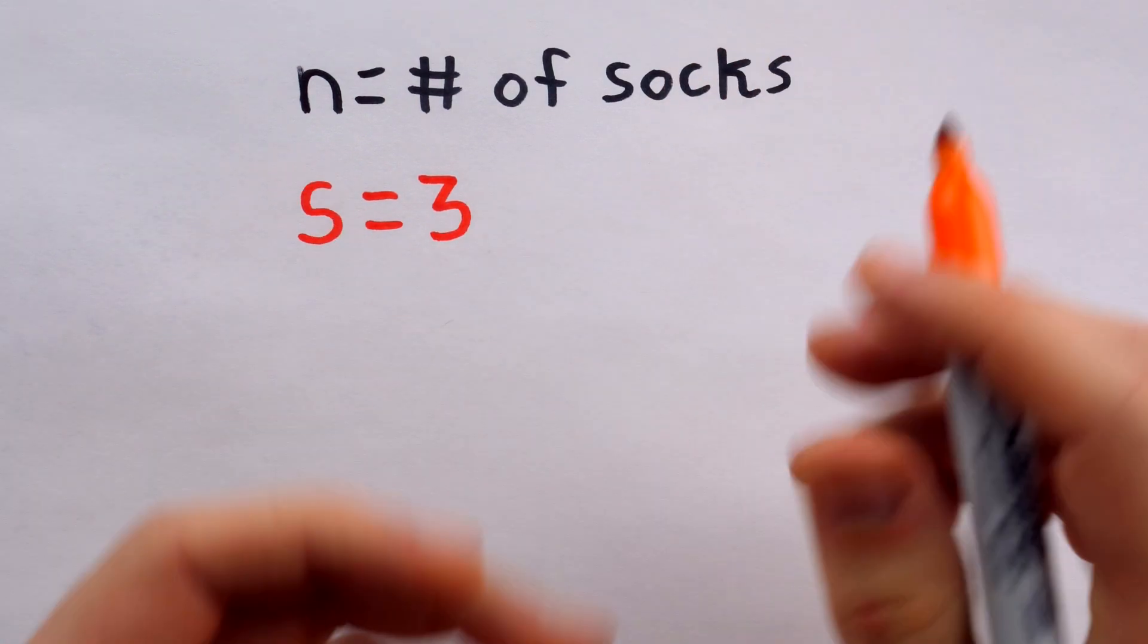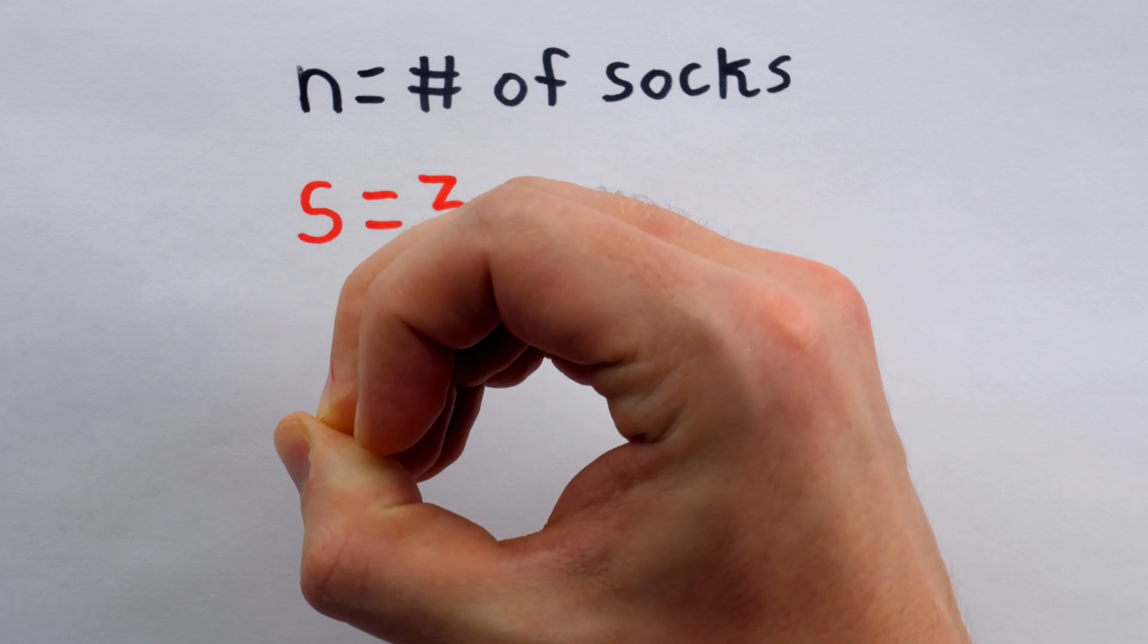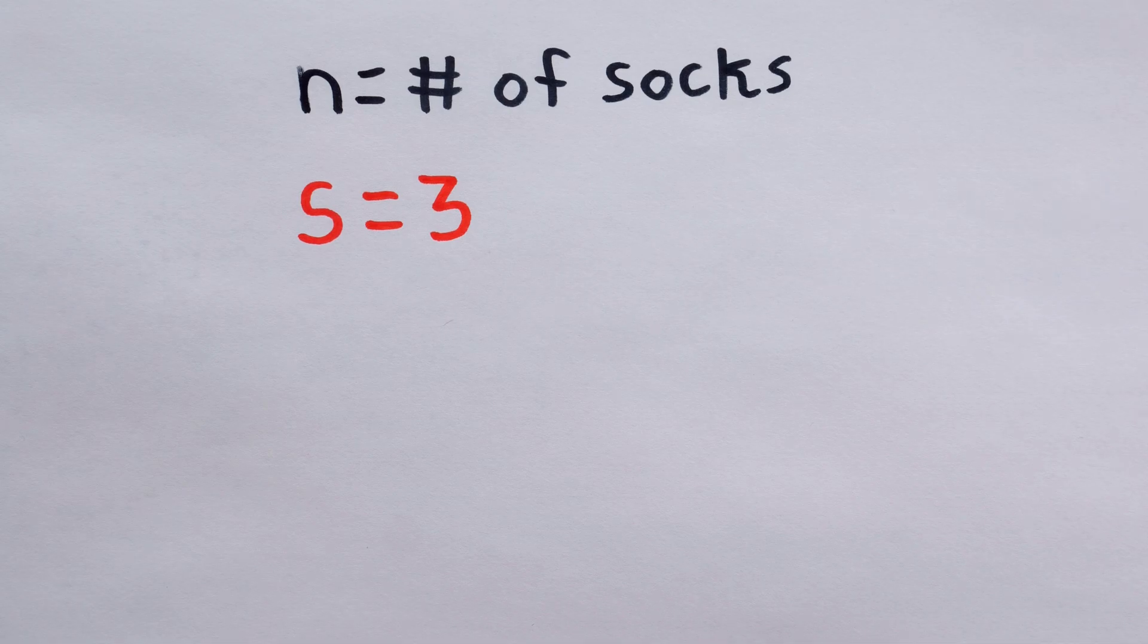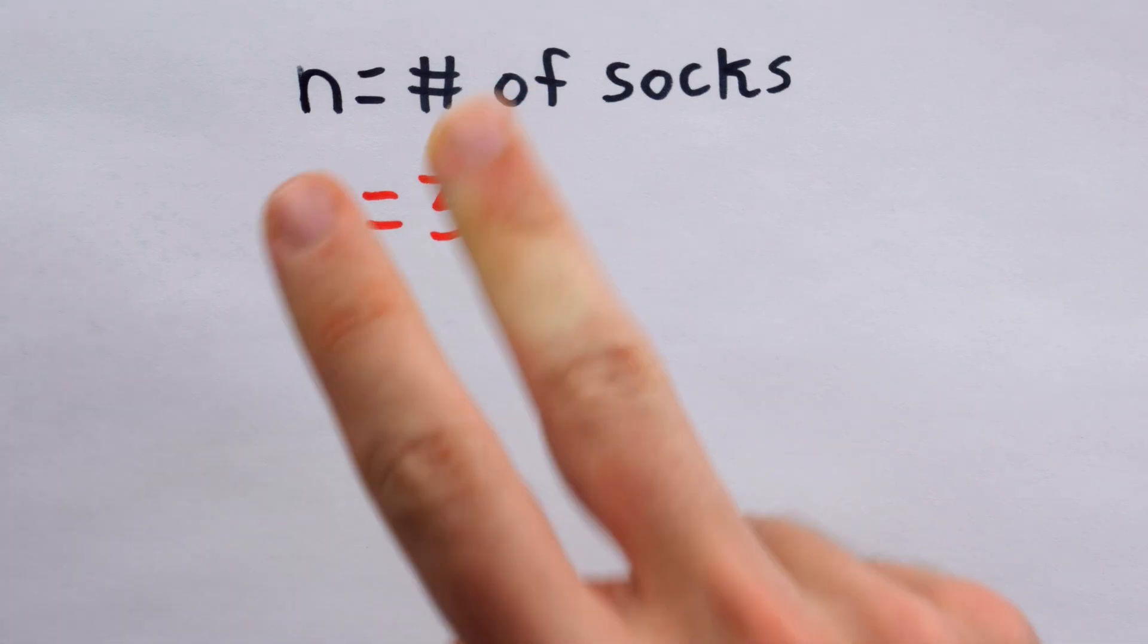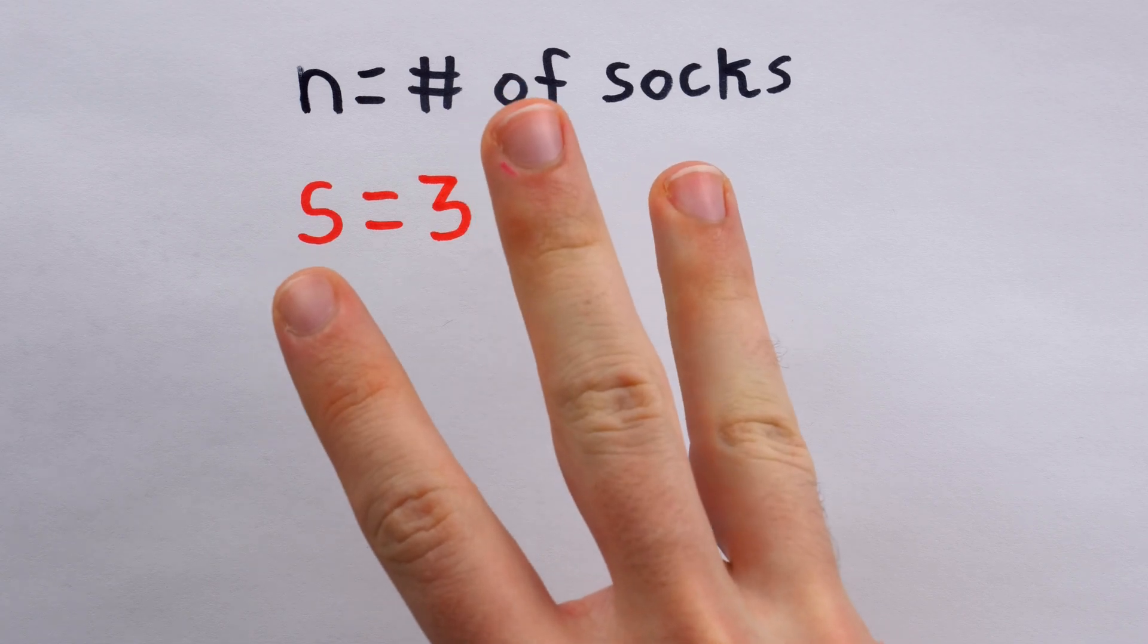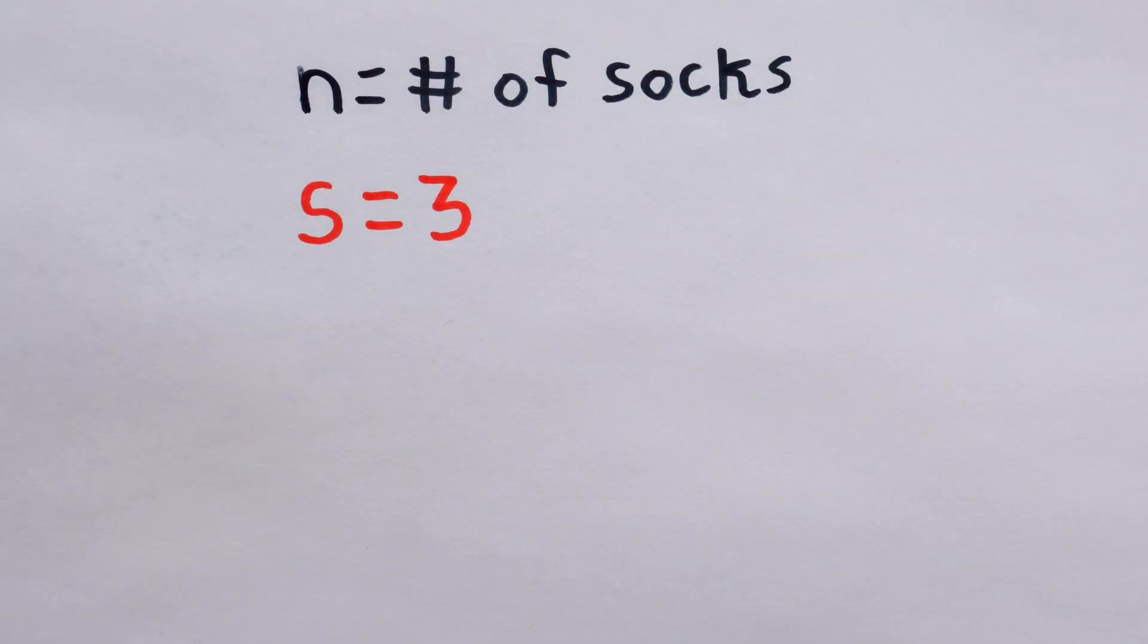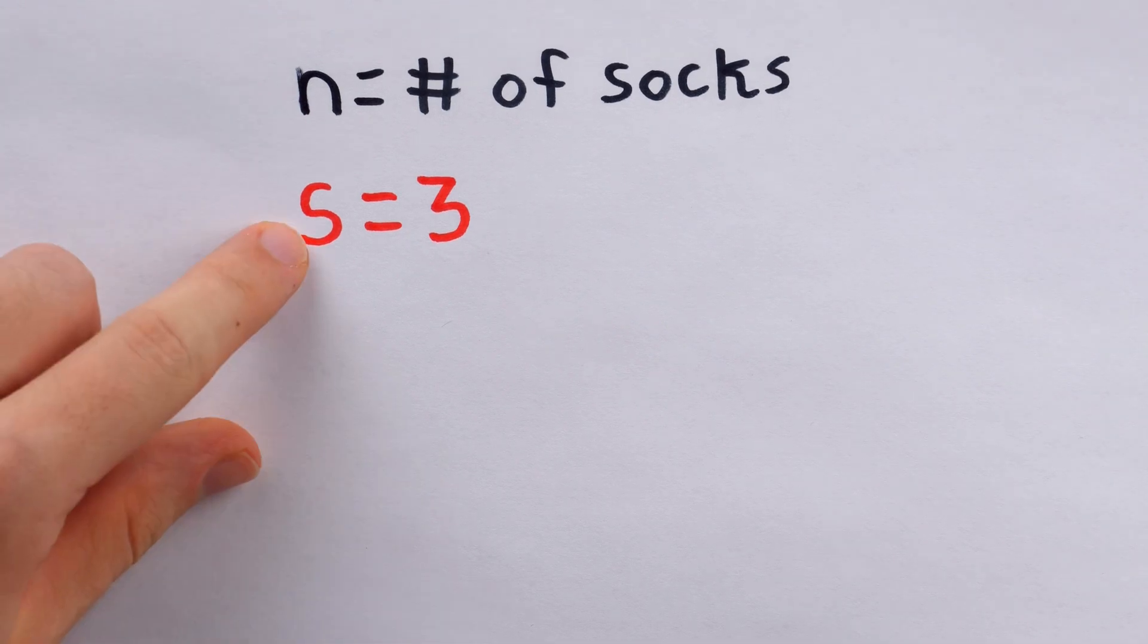Of course, it would be relevant if there happened to be no socks at all, but we know that can't be the case, because somebody with no socks wouldn't have a sock drawer. Similar logic rules out the case of there being one sock, two socks, or even exactly three socks. Somebody with a sock drawer certainly has at least half a dozen socks. Okay, so S equals three.